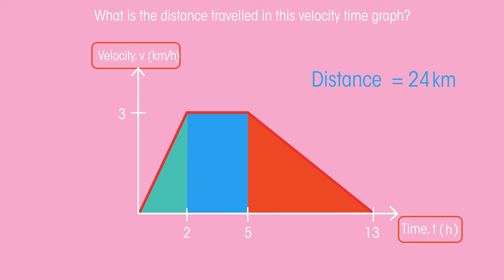So there we have velocity time graphs. Velocity on this axis, time on this axis, and the area underneath the graph is the distance. Simple.